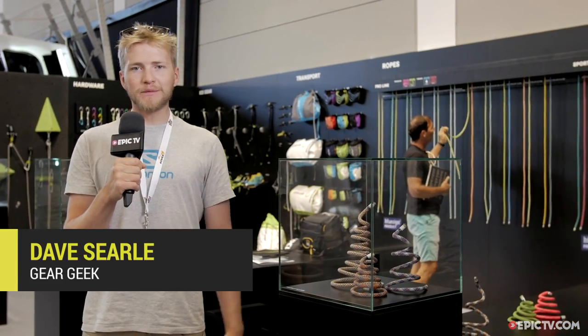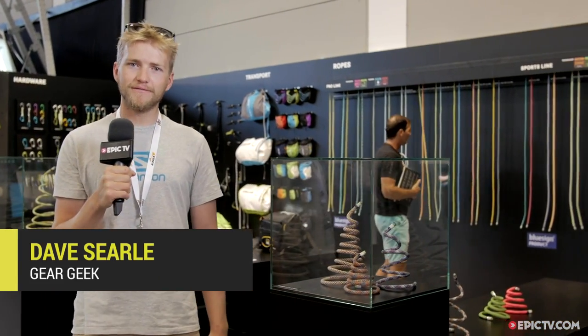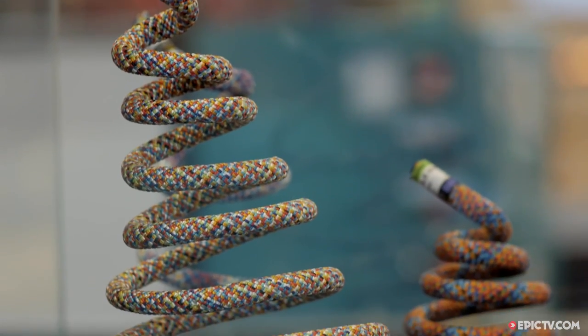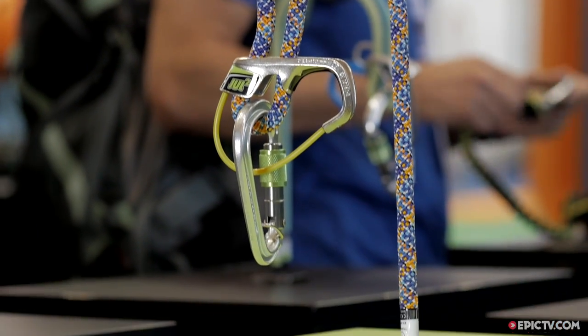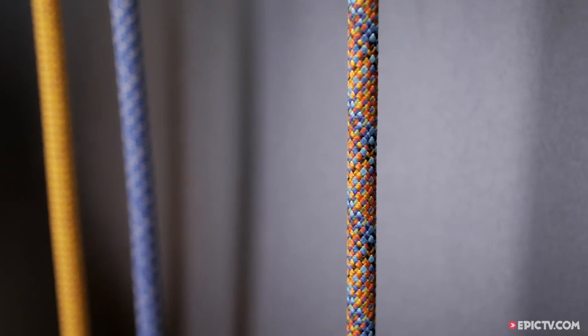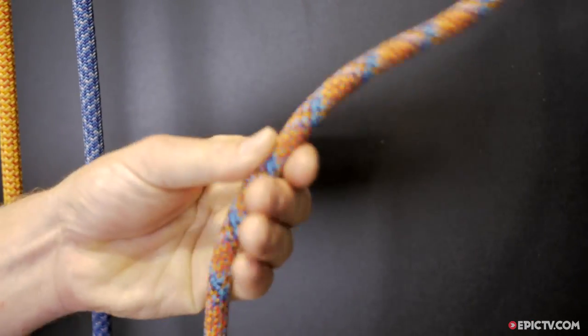We're here in Frederickshafen and I'm really psyched to be checking out the new ropes from Edelrid. Edelrid's new rope, the Parrot, is another product from the German company that has its eyes set firmly on sustainability.